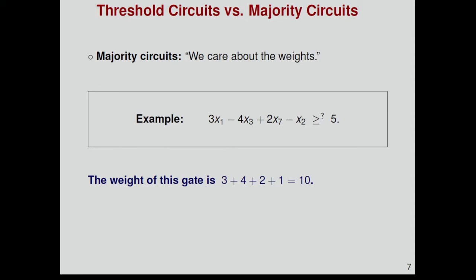Let me introduce the following notation. I'm going to use majority circuits for exactly the same model, but here I care about the weights inside each gate. For instance, if we have a threshold gate like this, the weight of this gate is just the sum of the absolute values of the coefficients. We're going to measure the size of majority circuit by the total weight in the circuit.